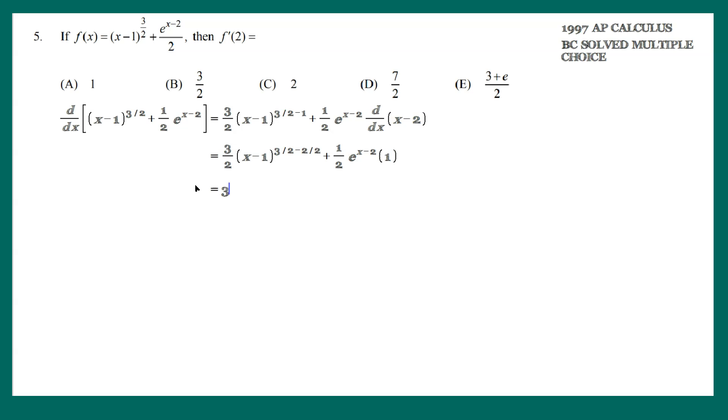Which then lastly would give us 3 halves, and then x minus 1 raised to the 1 half, which is the square root, basically, plus this 1 half of e raised to the x minus 2, and then we just have to evaluate this.